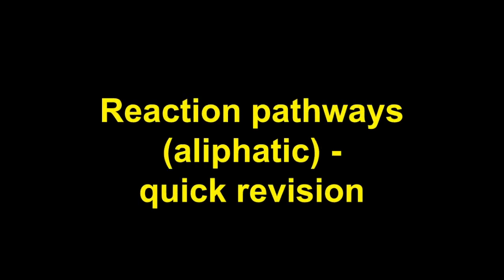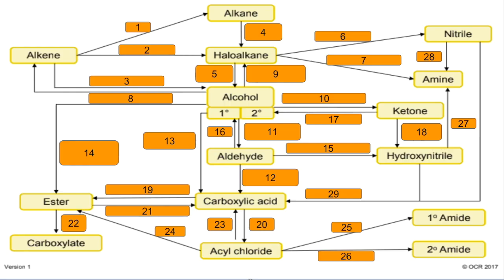Quick revision video on the organic reaction pathways for aliphatic compounds. I've got this flowchart from OCR and all I've done is hidden the reagents and conditions with 29 boxes. That's the order I'm going to go through them in. If you want to pause the video you could try and do these yourself and then play on to check your answers.